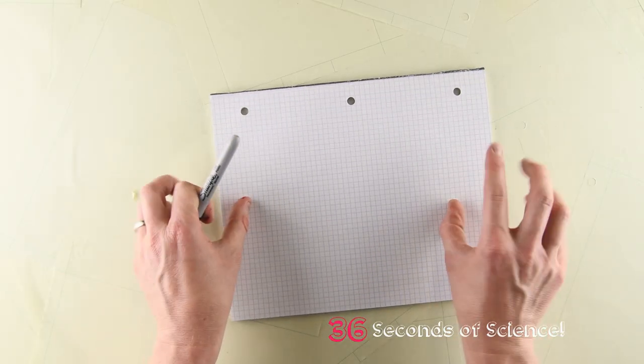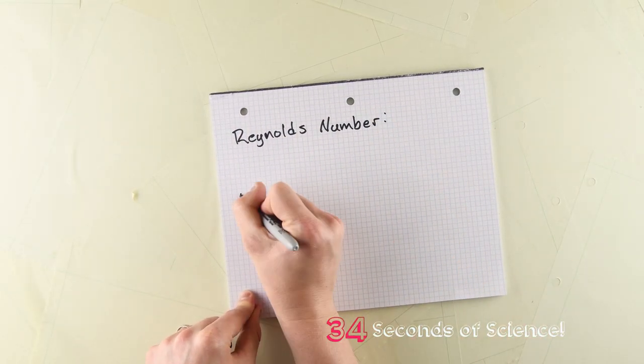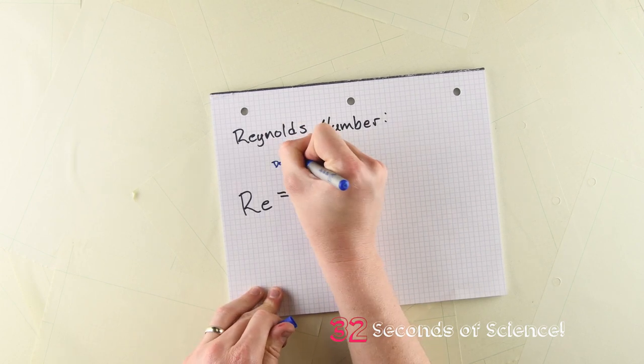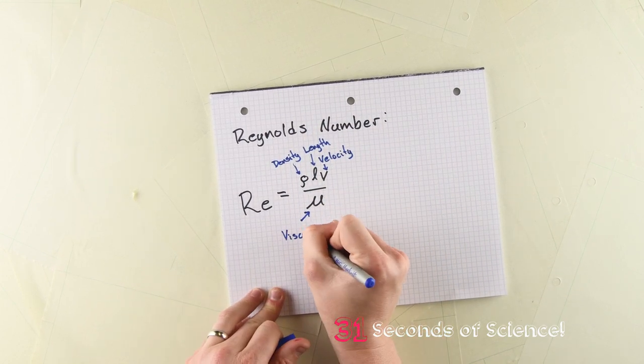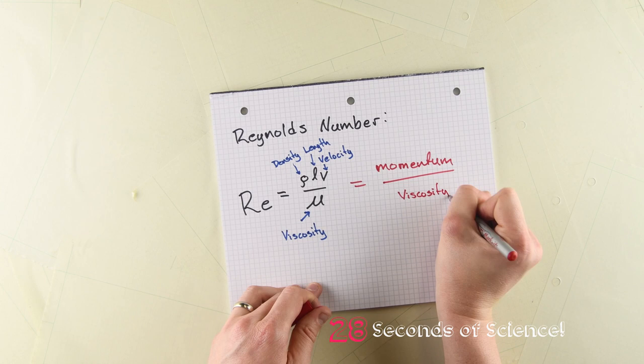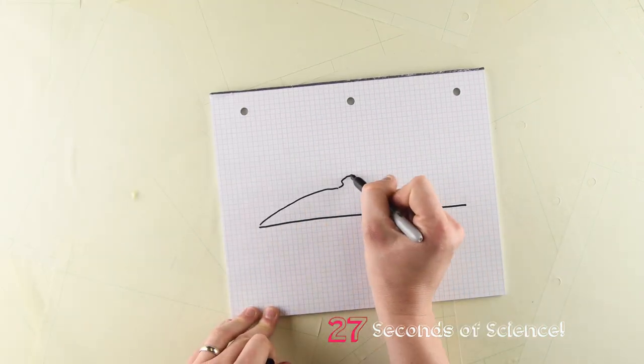In science, we can tell if a flow is turbulent by looking at something called the Reynolds number, which tells us how the inertial force of a fluid, or how much momentum it has, balances the viscous force of a fluid, or how much it can restrict its own momentum.